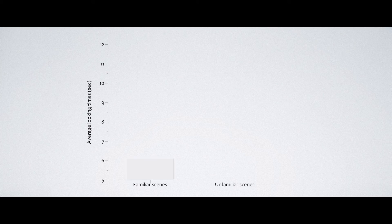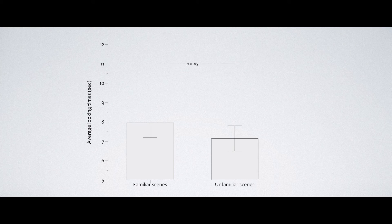We observed that, on average, infants looked longer at the test scenes in which the target was presented at the familiar location than at the unfamiliar location. These results show that infants were able to differentiate the two types of test trials and therefore indicate that they learned the target-context associations.